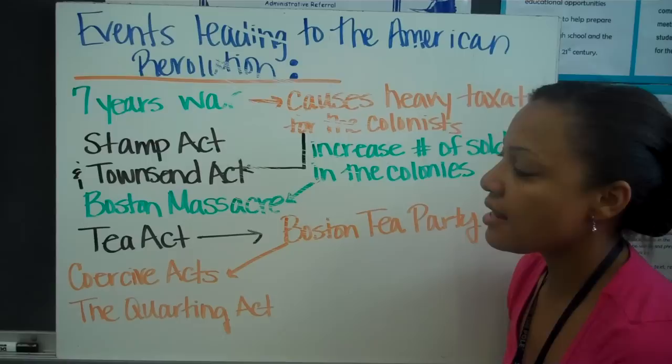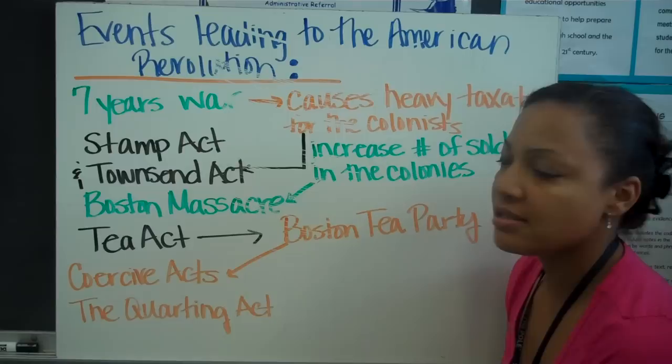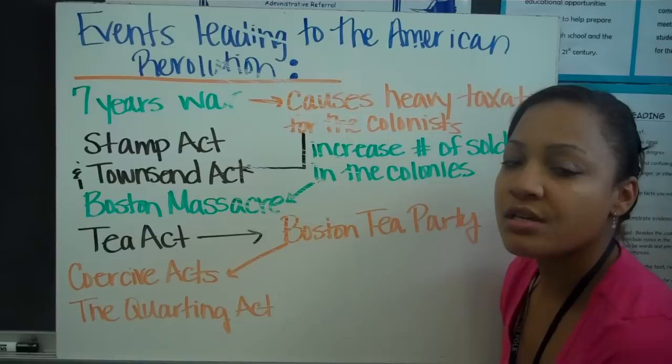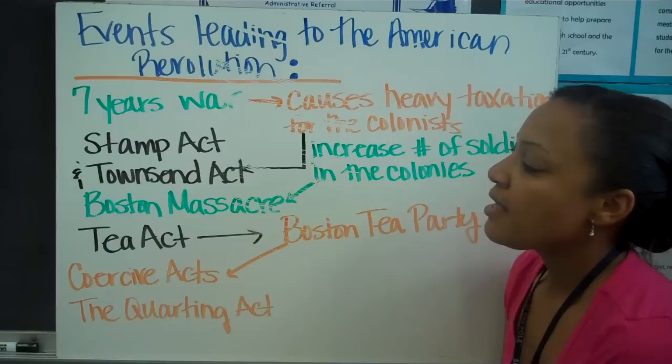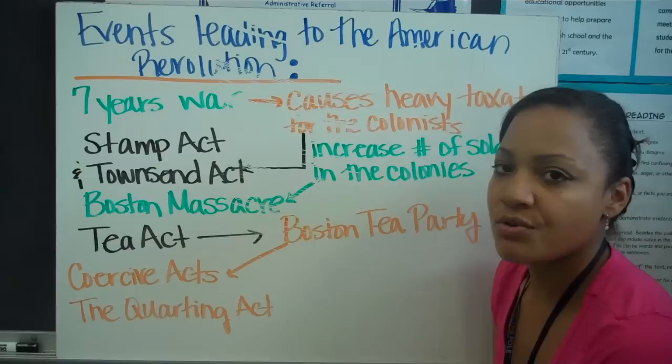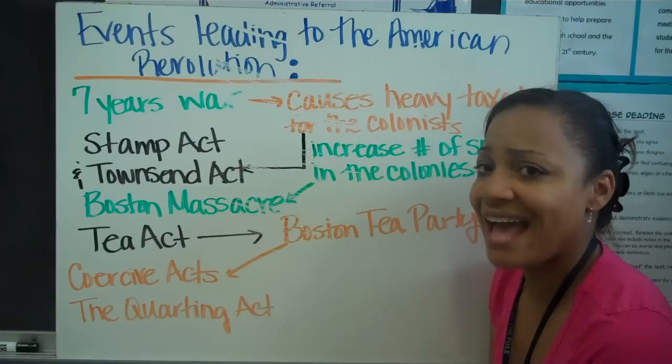This led to an event called the Boston Massacre. Not many people died — only five — but it is called a massacre because the colonists said they had no weapons and were only throwing snowballs or rocks. The two accounts differ on what was thrown, but in the end they threw something at the British soldiers, who then fired on them. That's why it was called a massacre.